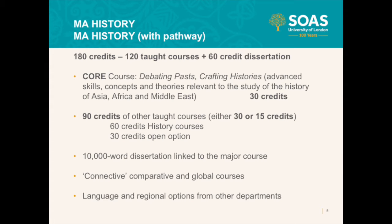Starting with our main MA History program — we have the MA History and also the MA History with pathway option, which produces quite a lot of confusion. The default is that you receive an MA History degree. The pathway option allows you to connect your MA History degree to a particular region. The pathway is designed for students who want to emphasise a regional speciality — for students who want to go on and do a PhD in a particular area studies program, or for people who have a very regionally focused research future. There is absolutely no obligation to select the pathway; it is an option should you need it.